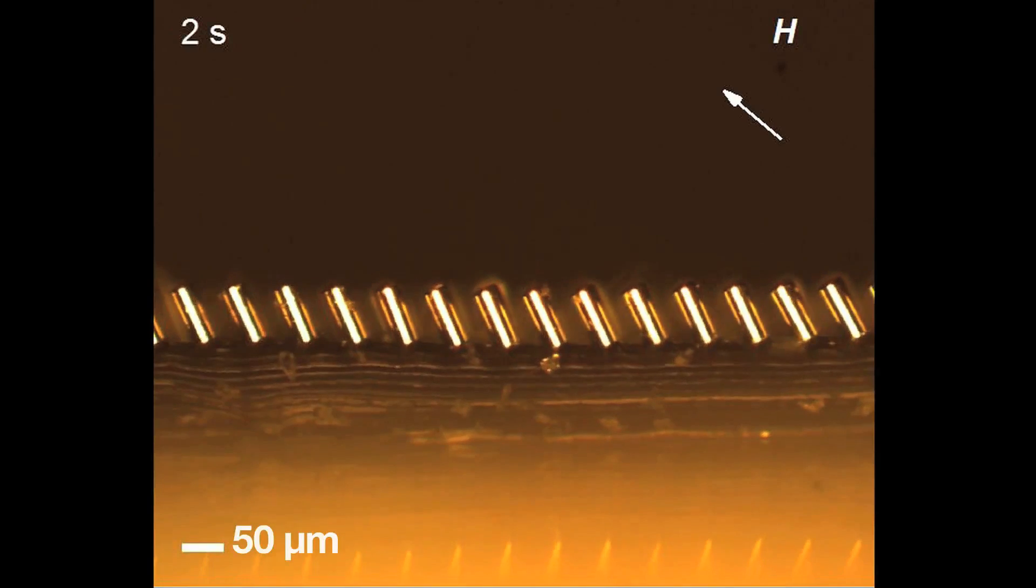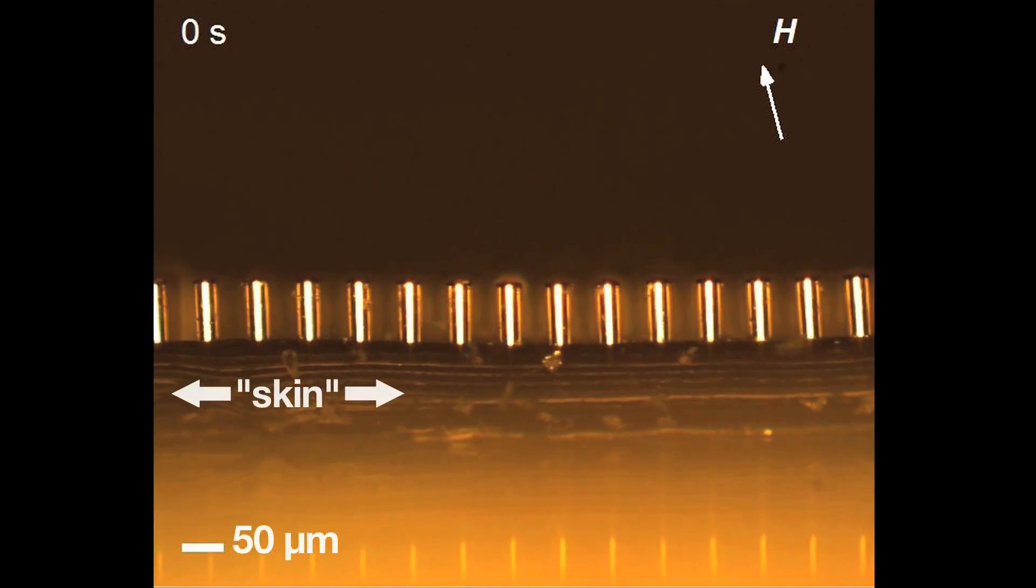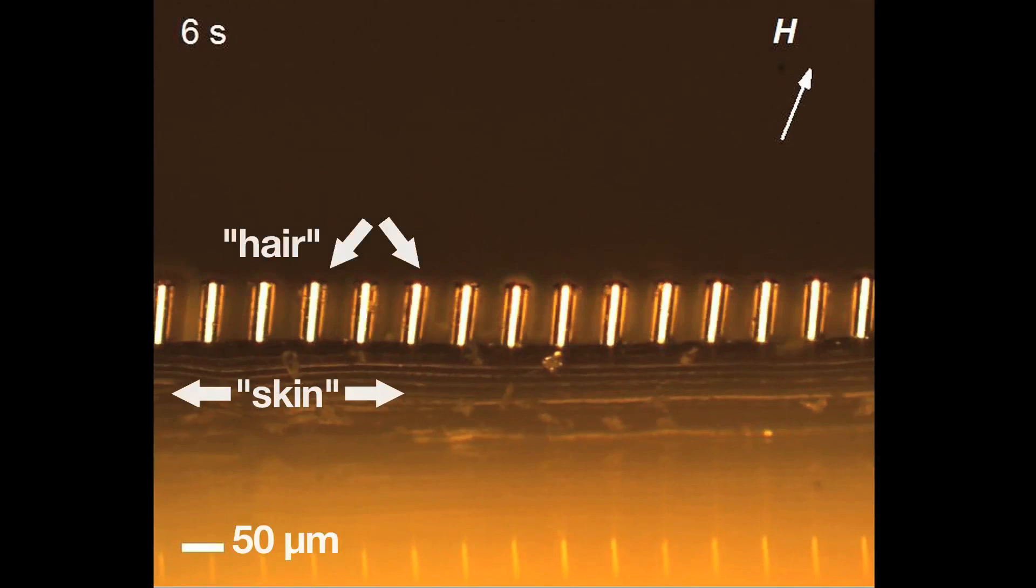Researchers at MIT have developed a flexible material inspired by animal hair that moves in response to a magnetic field. The surface consists of a thin, flexible polymer skin and a ferromagnetic, hair-like micro-pillar array.